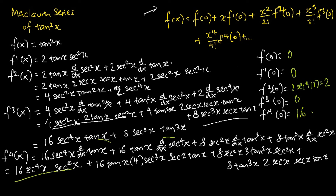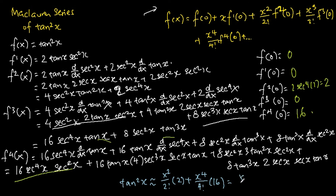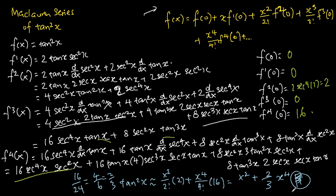Once we have f(0), f'(0), f''(0), f'''(0), and f''''(0), we can express tangent squared x as a Maclaurin series up to x to the power of 4. The final answer is: tangent squared x is approximately x squared over 2 factorial times 2, plus x to the power of 4 over 4 factorial times 16. Simplifying, we get x squared plus two-thirds x to the power of 4, since 16 over 24 reduces to 2/3.